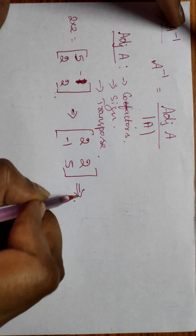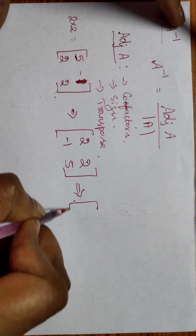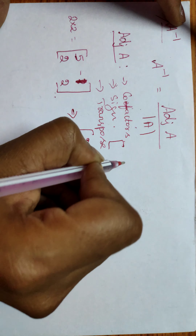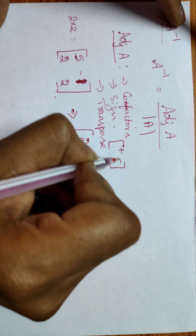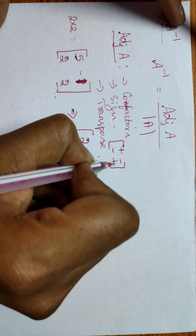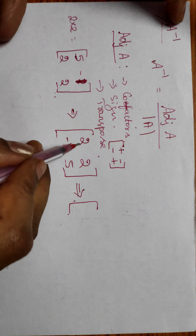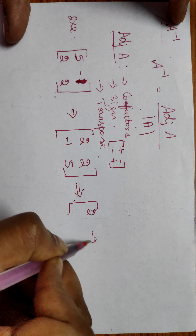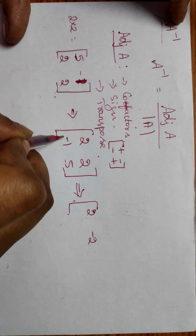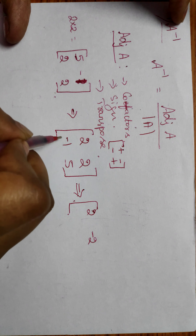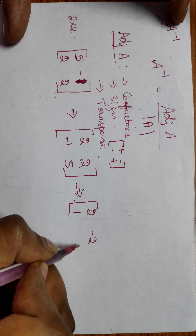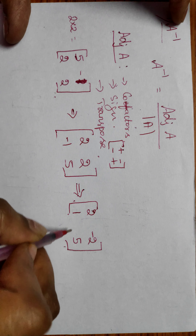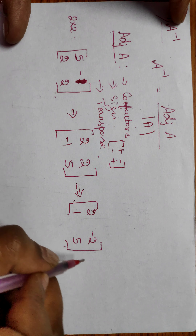Then we have to perform the sign operation. For a 2×2 matrix, the sign pattern is plus, minus, minus, plus. So we apply: plus 2, minus 2, minus into minus 1 gives plus 1, and 5. Once we perform the sign operation, we have to perform the transpose.